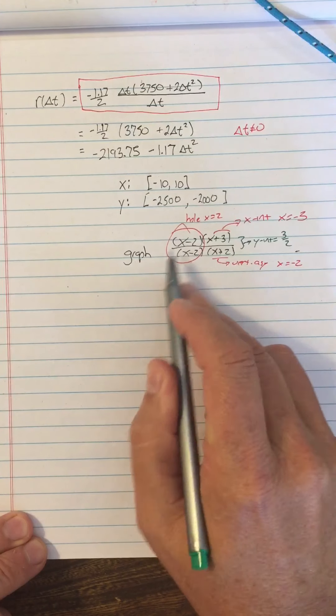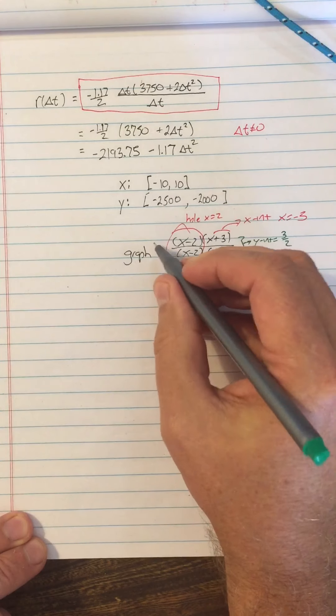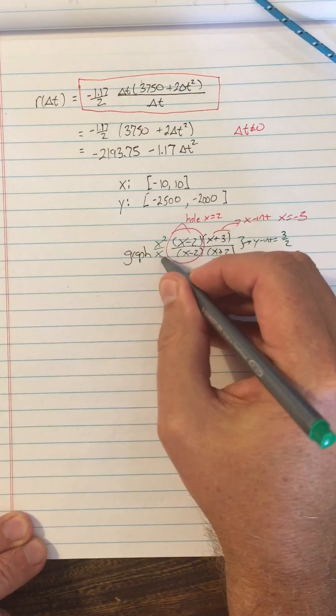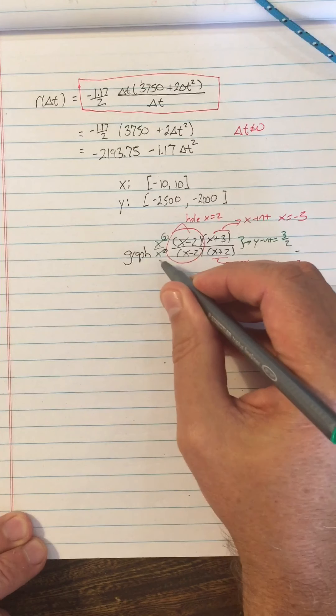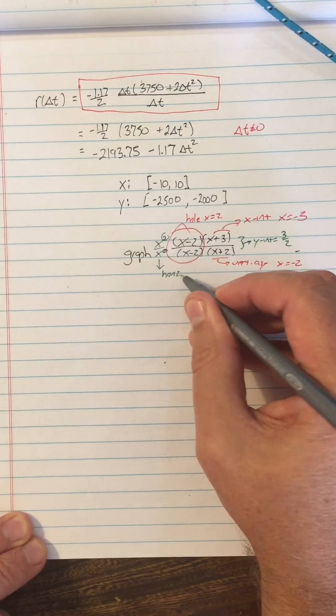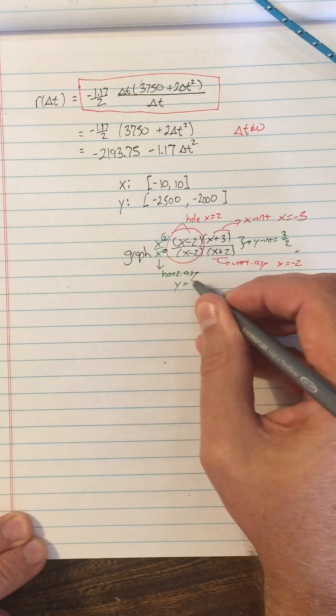And you could look at that if I foiled out the top, the two leading coefficients are going to be x squared over x squared. So I have matching degrees, so I'm going to have a horizontal asymptote of y equals 1.